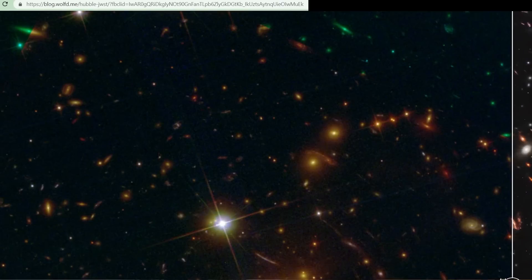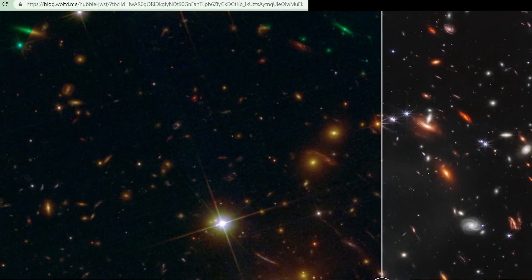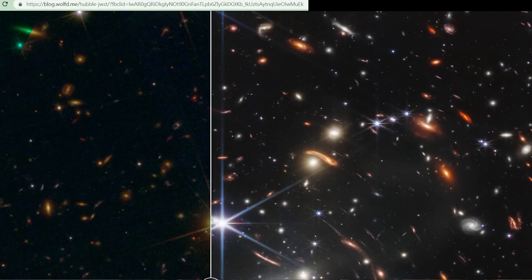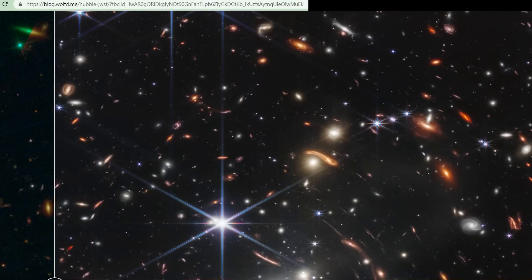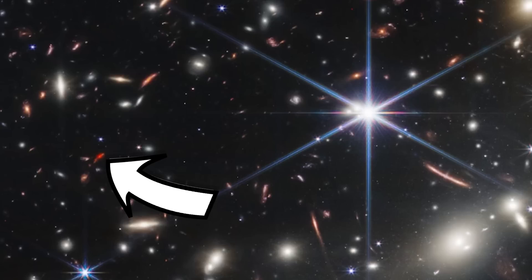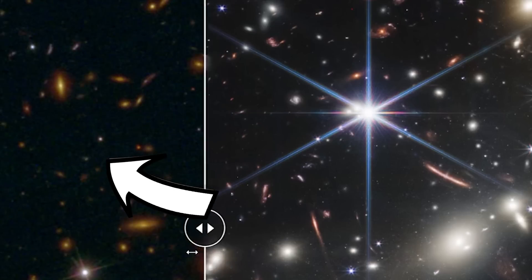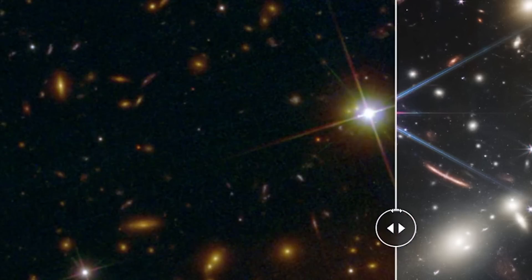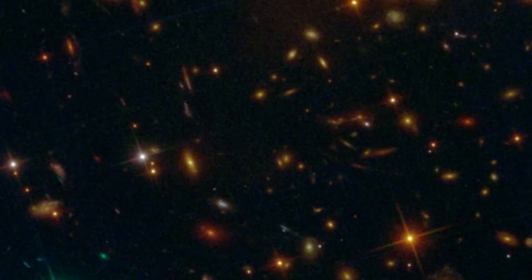Finally, I just want to show you this website where you can slide between the new Webb image and the older Hubble image of the cluster. I'll leave a link in the description, and it's a really fun and interactive way to see the differences. Pick a distant red galaxy and watch it disappear in the Hubble data, or pick a Hubble galaxy and watch all of its structure and detail reveal themselves in the Webb image.